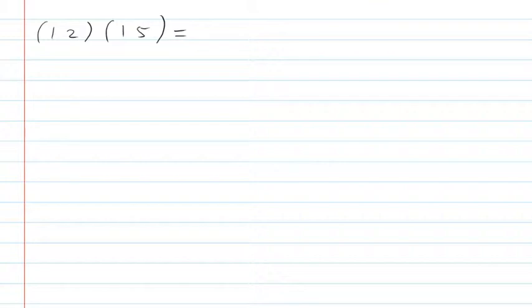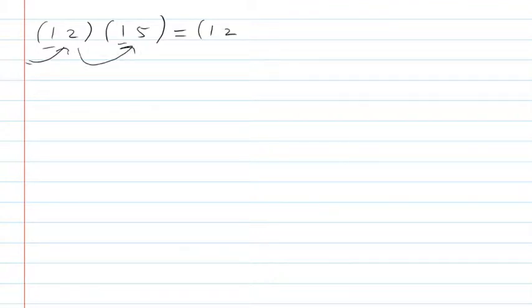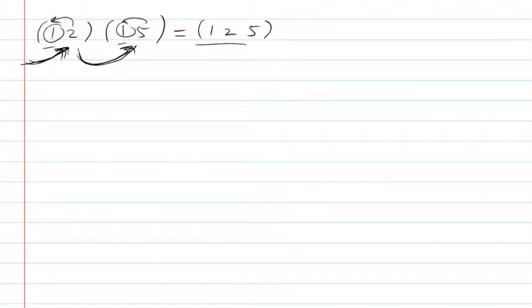Here's an example of two two-cycles, and notice how they have the first number in common. When I do the composition, one goes in, one turns to two, two stays as two. Then two goes in here, two becomes one, the one becomes five, the five stays as five, and five turns into one. So the product of these two two-cycles that share the first number becomes a three-cycle: (1, 2, 5).